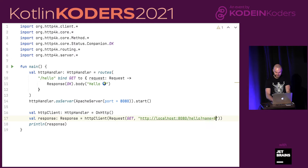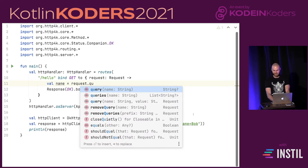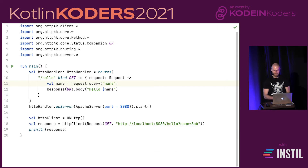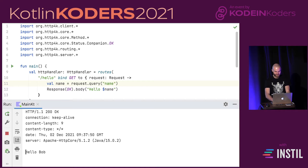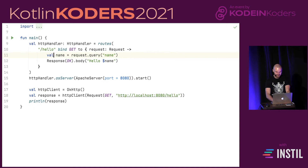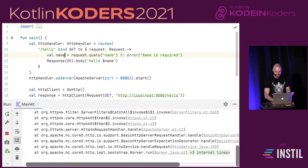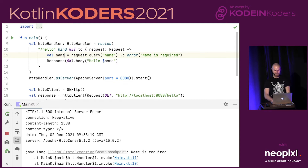It would be nice to pass some parameters, so I'll say hello with name Bob. I can have a variable extracted from the request object — on the request interface we can call query to extract the name parameter. Now we have a 200 and the response is 'hello Bob'. The question is what happens if we forget to specify name — the query return type is nullable, so we'd get 'hello null', which is not ideal. We can check for null and say 'name is required', making it non-nullable.